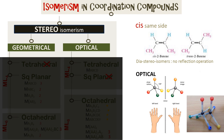Optical isomers are mirror images of each other. One of the key aspects is that they cannot be superimposed on top of each other. Optical isomers have identical physical properties and chemical properties. The main difference is that the plane of polarized light, when passed through such optical isomers, is rotated clockwise or anticlockwise depending on the geometry of the optical isomer.